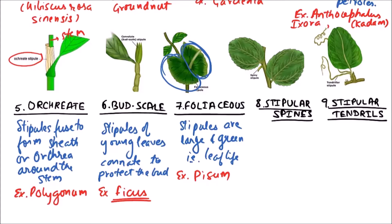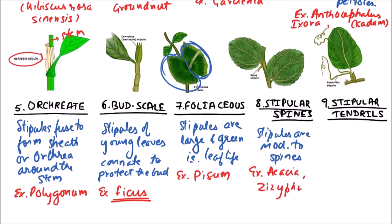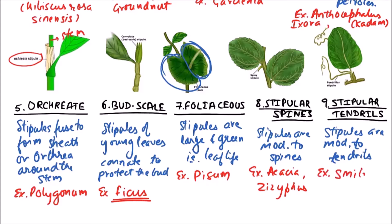The next type is Stipular spines. In this case, stipules are modified to spines for protection. Examples include Acacia and Ziziphus. Stipules can also be modified to stipular tendrils for support, as seen in Smilax.